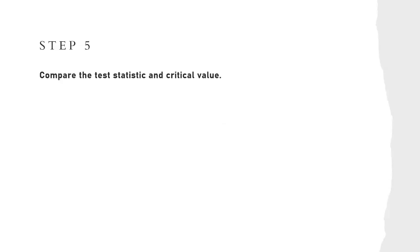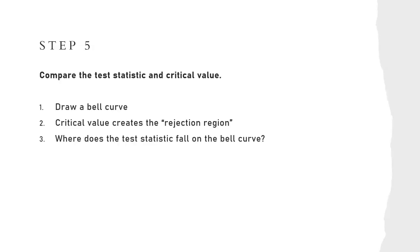Step five is to compare your test statistic and your critical value. So this is where we can draw that bell curve and we can set our rejection region by using our critical value. And if our test statistic falls within that rejection region, that's how we would know if we need to reject our null hypothesis.